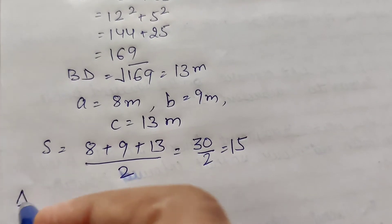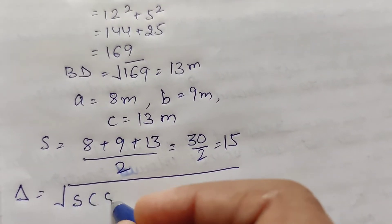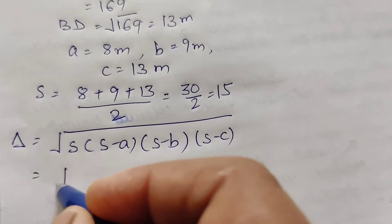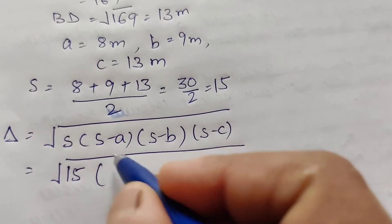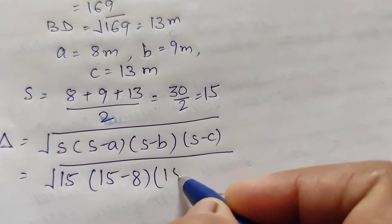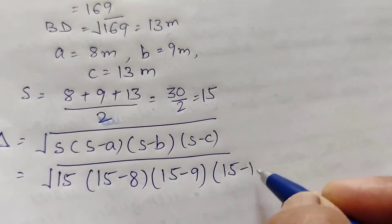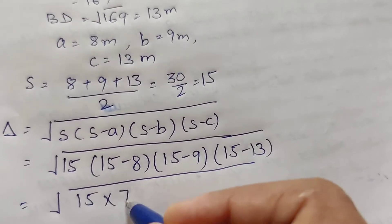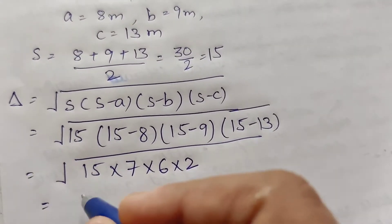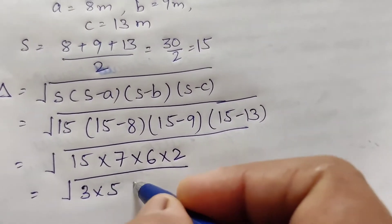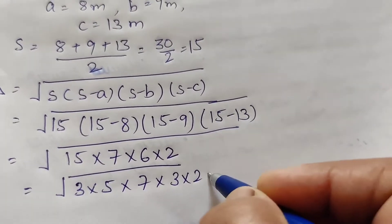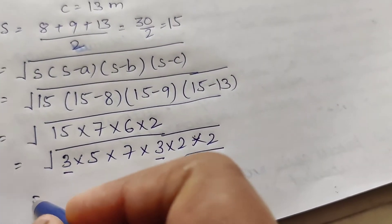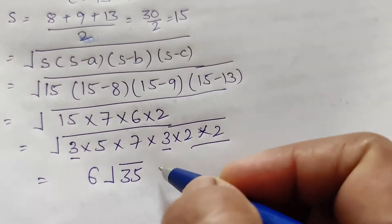Area of triangle equals under root of S(S−A)(S−B)(S−C). Under root of 15 into (15−8) into (15−9) into (15−13), which is under root of 15 into 7 into 6 into 2. After prime factorization and pairing, this gives 6 root 35 meter square.